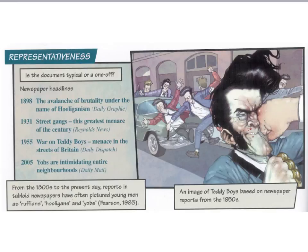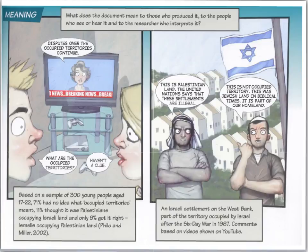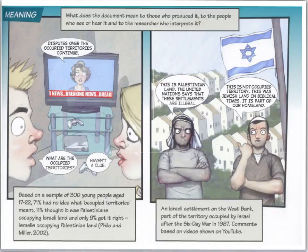Not all surviving documents are even available for researchers to use — for example, certain public documents produced by the government may not be available for at least 30 years due to national security concerns. Finally, Scott argues that to ascertain the meaning of a document, we need to ask what the document means to those who produced it, to those who see and hear it, and how that relates to the way the researcher interprets it. The key issue is to be aware that documents are open to multiple interpretations — in other words, documents are polysemic, capable of being read in a variety of different ways.